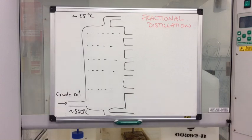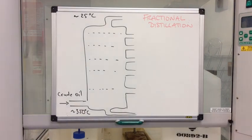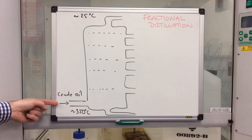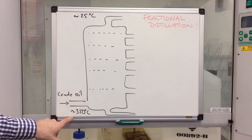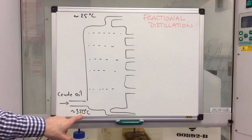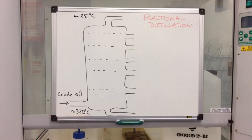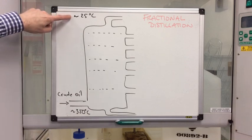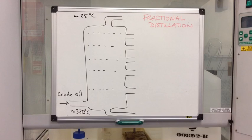Now we're going to look at how the alkanes, these different sized alkanes, are separated, and that's done by a process called fractional distillation. And it would typically take place in something that looks a bit like this. So we've got crude oil which is fed in at the bottom of the tower, and you can see that the temperature is approximately 350 degrees C. You'll notice at the top it's a lot colder, it's only 25 degrees C up there.